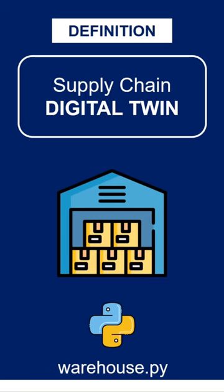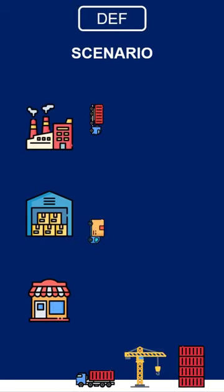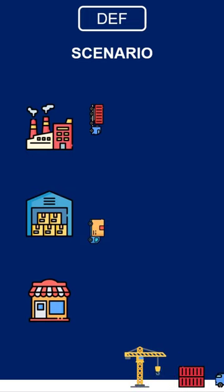What is a supply chain digital twin? A supply chain is a goal-oriented network of processes used to deliver goods and services to customers.